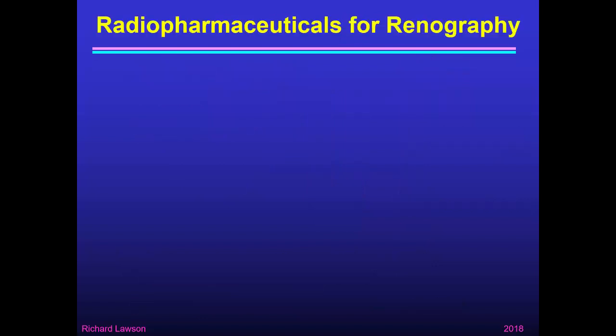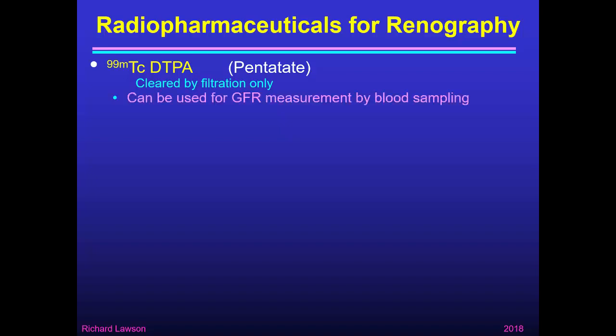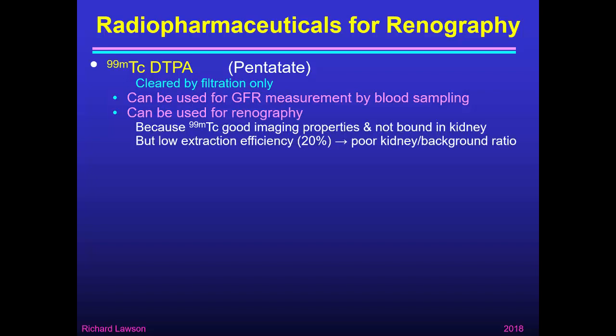Looking at the radiopharmaceuticals for renography: technetium-99m labelled DTPA (pentatate) is cleared by filtration only. This is good if you want to measure glomerular filtration rate, because by taking blood samples and seeing how quickly it disappears from the blood, you can measure the GFR. It can also be used for renography, since technetium-99m has good imaging properties for the gamma camera and DTPA is not retained in the kidney. However, its extraction efficiency is rather low at 20%, so not much appears in the kidney and quite a lot is left in the blood, giving a rather poor kidney-to-background ratio.